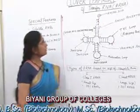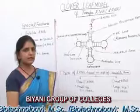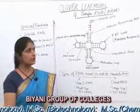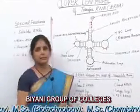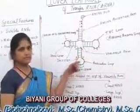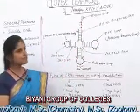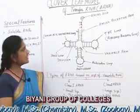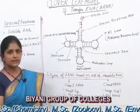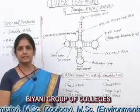Today we will discuss the cloverleaf model of transfer RNA. It is a secondary configuration of transfer RNA where the single-stranded polynucleotide chain gets folded on itself and forms a special appearance which looks like a cloverleaf. So it is named the cloverleaf model. This model was proposed by Robert Holley in 1965.